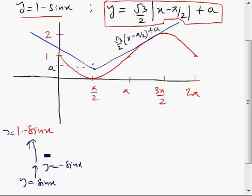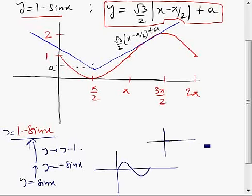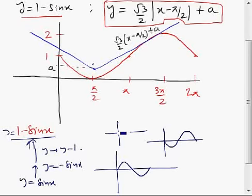For sin x, this is the graph of sin x. For minus sin x, we replace y by minus y, which inverts the graph in the x-axis. Then replacing y by y minus one shifts it one unit upward. So this is the graph of one minus sin x.